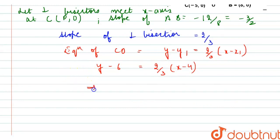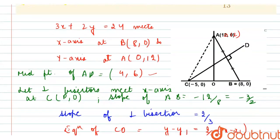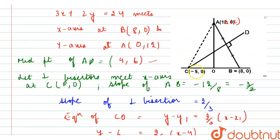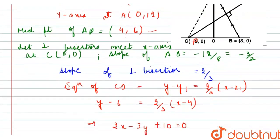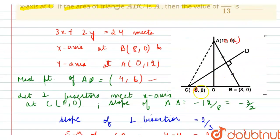The equation would be y minus 6 equals 2 by 3 times (x minus 4). After simplifying, it's 2x minus 3y plus 10 equals 0. As we can see in the diagram, line CD meets the x-axis at point C (p, 0). Putting y equal to 0 in this equation, x equals minus 5. Therefore, the coordinates of point C are (-5, 0).